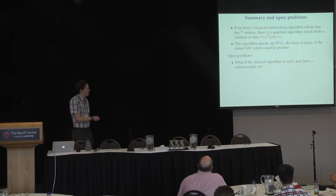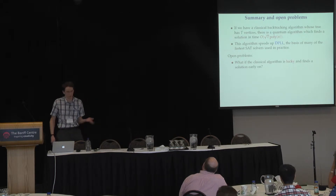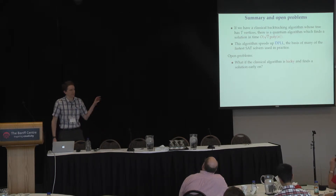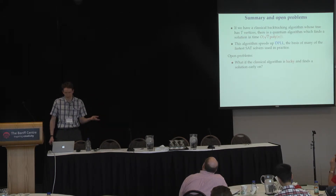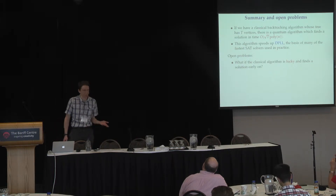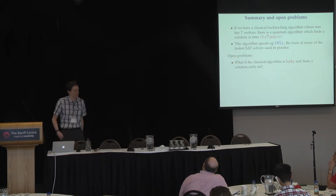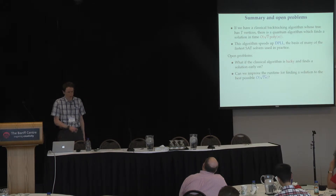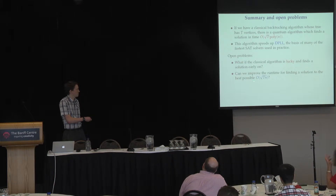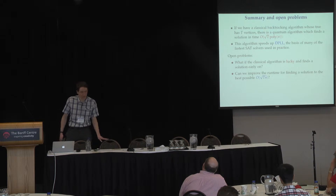Some open problems. What if the classical algorithm finds a solution early on in the tree? For example, it could go down to the left-hand edge of the tree first, and maybe that's where the solution is. In this case, the quantum algorithm might not achieve a speedup. It would be nice to speed up the classical algorithm in this sense. Can we improve the runtime to the best possible, which would be square root of t times square root of n?